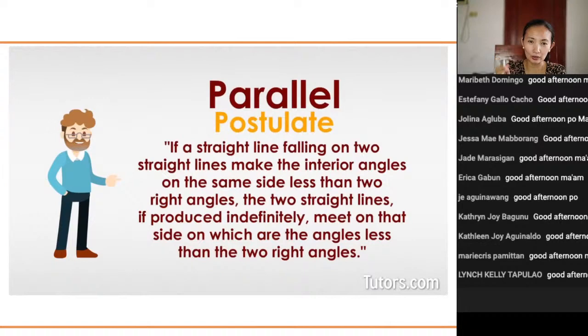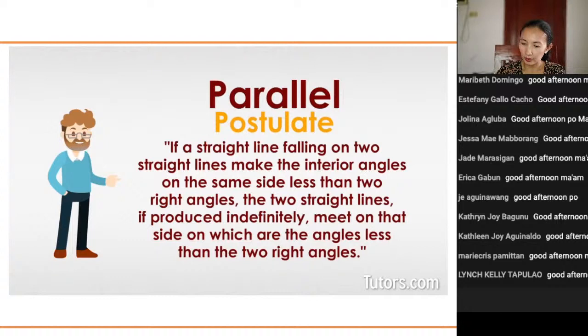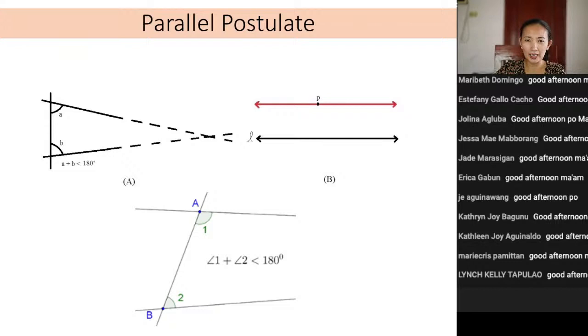Remember what we said about postulates — they are assumed to be true even without proof. Euclid perhaps intentionally placed this as the fifth postulate because he had difficulty showing a proof. In fact, according to Greenberg in his book, Euclid himself postponed using the parallel postulate to prove some other theorems because he was unsure of it. Now, what do we mean by two parallel lines?